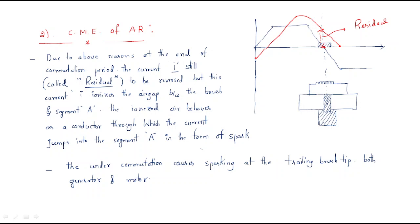This residual current must become zero. It is a positive value that should become negative, but instead this current ionizes the air gap between the brush and segment A. The segment A is there, the brush is there, and the current should ideally be zero.